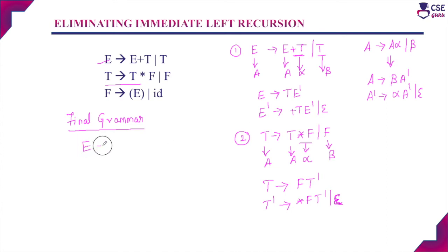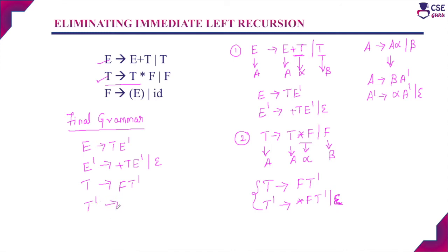The final grammar is: E derives T E-dash, and E-dash derives plus T E-dash or epsilon, replacing the original first production. T derives F T-dash, and T-dash derives star F T-dash or epsilon, replacing the original second production. The third production F derives E or id is kept as-is since it is not left recursive. This final grammar can now be used with a top-down parser.